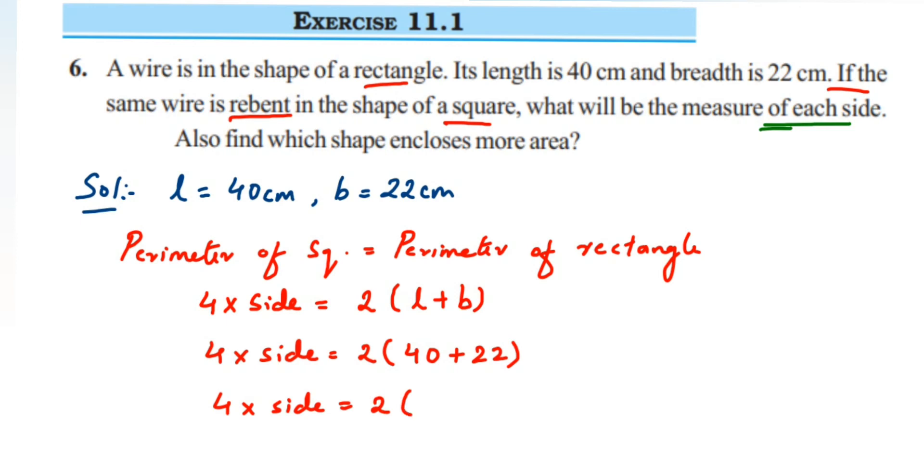Now we want only the side, we don't want this 4 on the left hand side. We're going to transpose this to the other side. So 4 which is in multiplication, when transposed to the other side, comes in division.